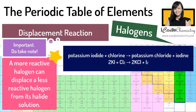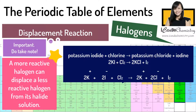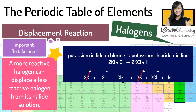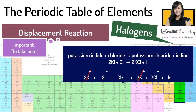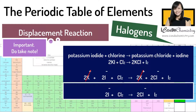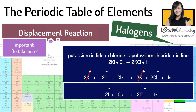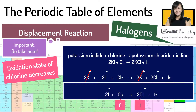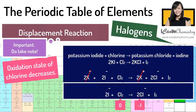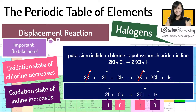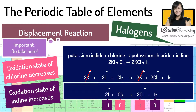If we convert this chemical equation to an ionic equation, we cancel away the spectator ions — in this case, the potassium ion — to get the ionic equation. Note that this is a redox reaction. The oxidation state of chlorine decreases from 0 in Cl₂ to -1 in Cl⁻, while the oxidation state of iodine increases from -1 in I⁻ to 0 in I₂.